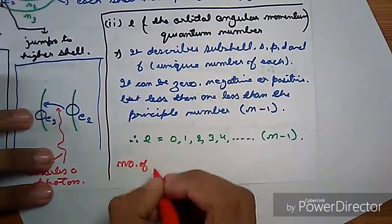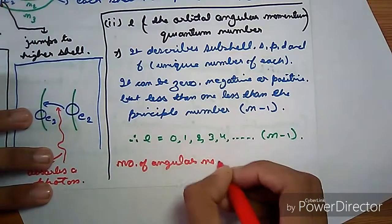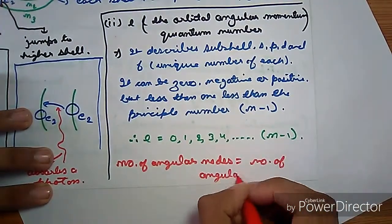Number of angular nodes equals the angular momentum number.